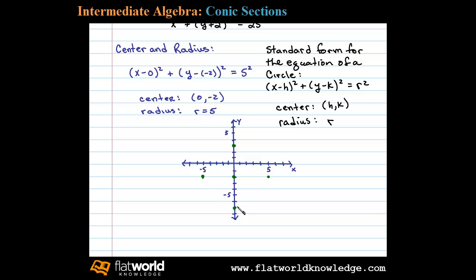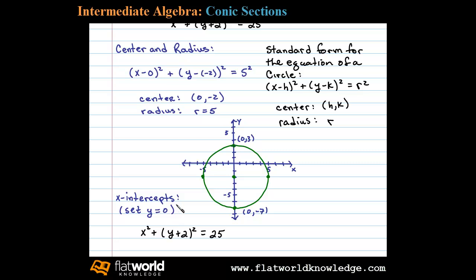Now we're ready to sketch this graph — remember this is a rough sketch. The problem also asked us to label the intercepts. We can see we have y-intercepts at 0 comma 3 and 0 comma negative 7, but the x-intercepts aren't so clear. To determine those, we'll have to use algebra. To find the x-intercepts, we set y equal to 0.